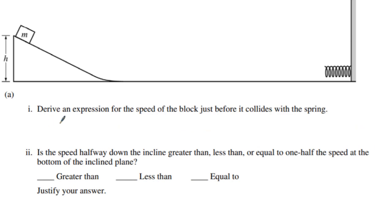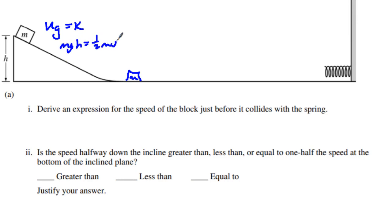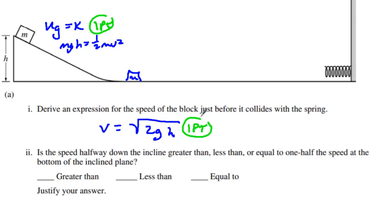The first question they're going to ask is: what is the speed of the box at the bottom? We have our gravitational potential energy equal to our kinetic energy, which means MGH equals one-half MV squared, which leaves us with the velocity equal to the square root of 2GH. That is worth two points — one point for understanding potential equals kinetic, and one point for your answer. So we got two points for letter A1.